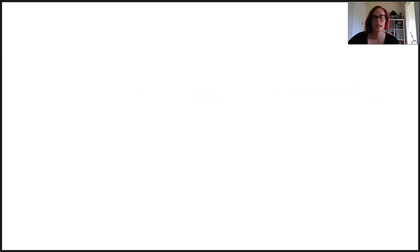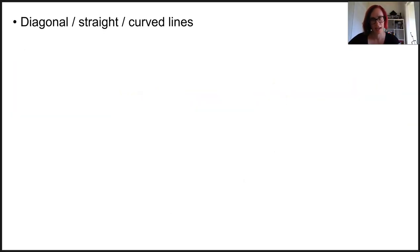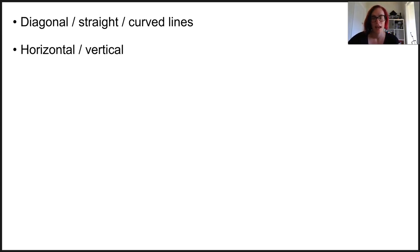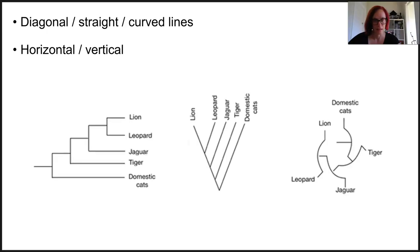Phylogenetic trees come in many shapes and sizes and can be created using diagonal, straight, or curved lines, and horizontal or vertical orientation — they're all showing the same thing. You might just find some easier to follow than others.